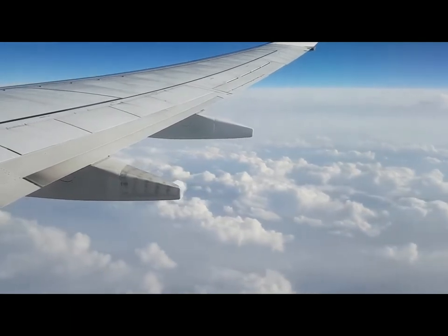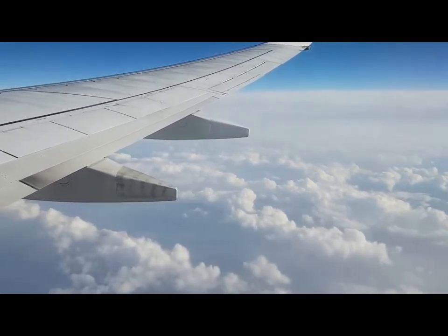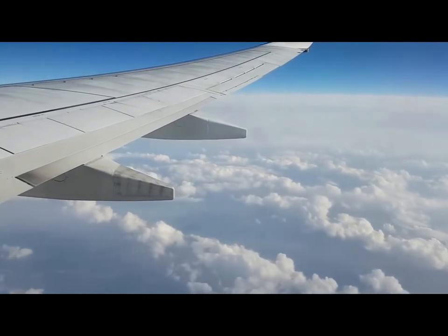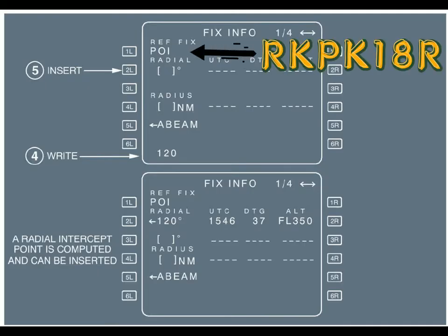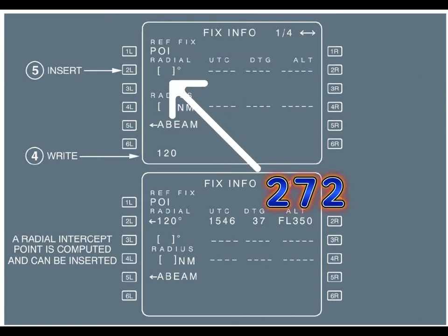First of all, setups. On the secondary page, select runway 18R. Then insert fixed information: RKPK18R, radial 272, which is the abeam radial of runway 18R threshold.